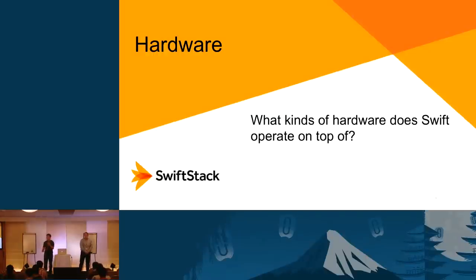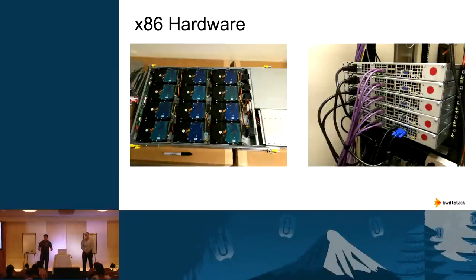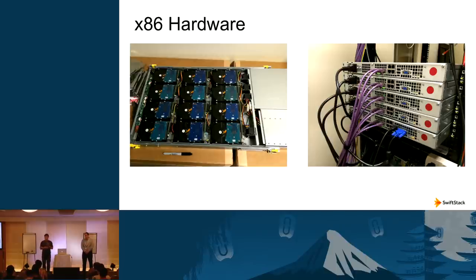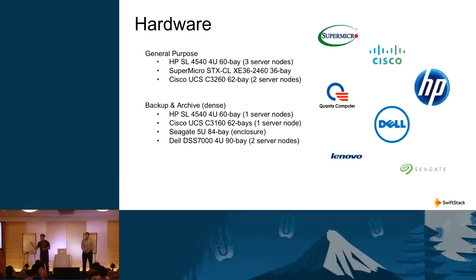What does it take to get a Swift cluster up and running? Swift runs on commodity x86 hardware — no brand-name requirement. The OS requirement is Ubuntu or CentOS; as long as the OS supports the underlying system and can present drivers for disks and networking, that's all that's needed. As shown by the logos on the slide, we work with pretty much any hardware vendor and have customers running on all of them.